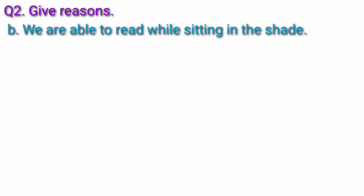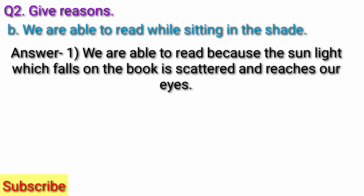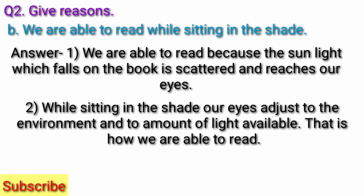Question B: We are able to read while sitting in the shade. Answer: We are able to read because the sunlight which falls on the book is scattered and reaches our eyes. While sitting in the shade, our eyes adjust to the environment and to the amount of light available. That is how we are able to read.